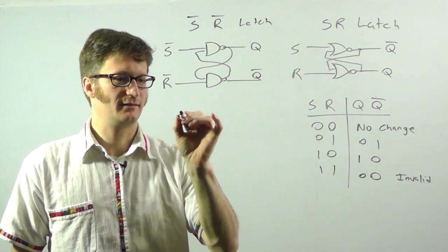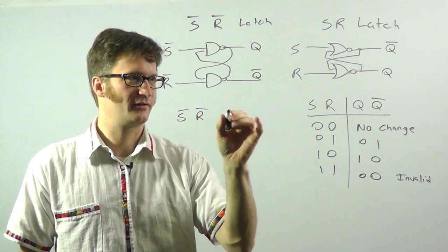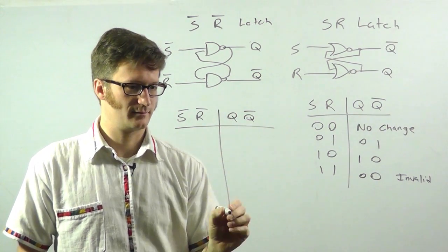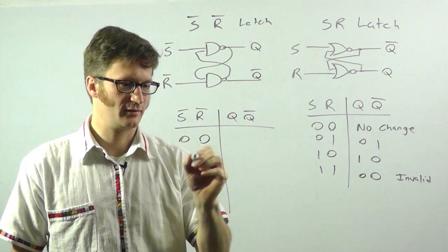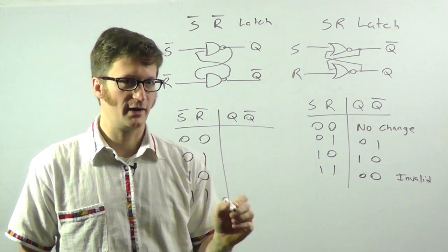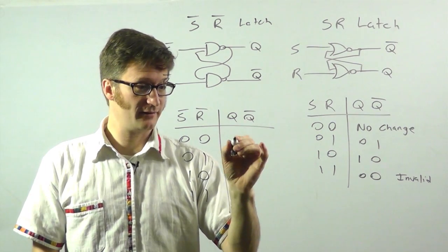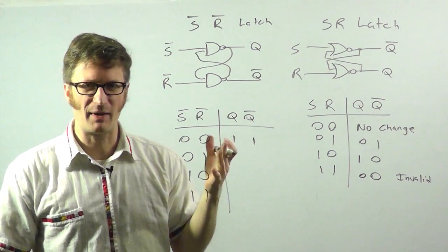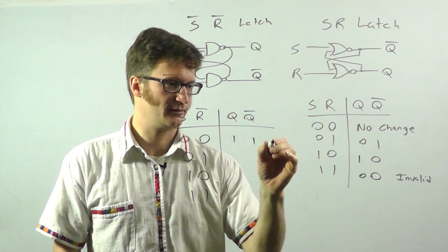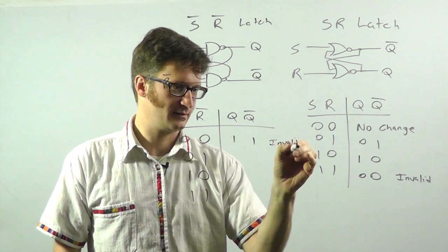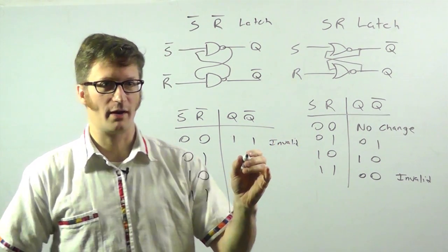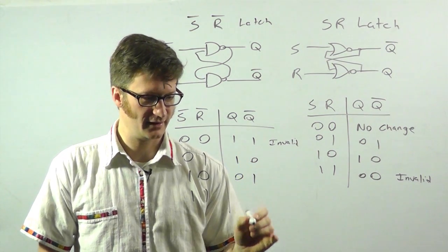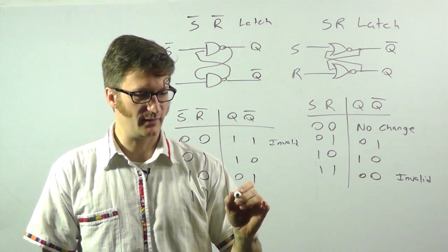Here is our truth table for this one. If I have 0, 0, 0, 1, 1, 0, 1, 1. The first thing that we're going to have is this is 1, 1, which is a semi-invalid state, just like this one was. If I have 0, 1, I get 1, 0 out of the output and 0, 1 for here. And then 1, 1 gives me no change.